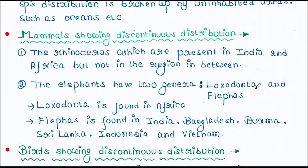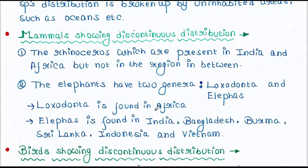Let's see some examples. First, let's talk about some mammals. The rhinoceros are present in India and Africa but not in the region in between. Elephants have two genera: Loxodonta and Elephas. Loxodonta is found in Africa, and Elephas is found in India, Bangladesh, Burma, Sri Lanka, Indonesia and Vietnam.